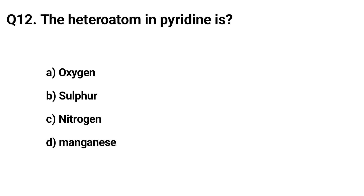Question number 12. The heteroatom in pyridine is. The correct answer of that question is option D: nitrogen.